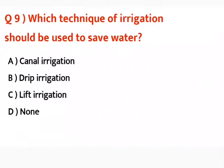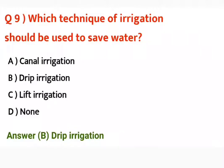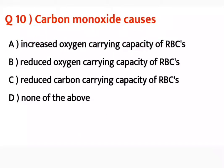Question number nine: Which technique of irrigation should be used to save water? Qunsi technique hai irrigation ki jis se hum pani ko bacha sakte hai? Correct answer is drip irrigation. Bilkul roots ke bilkul nazdik ek-ek-katra pani girta hai, us se hum drip system kehte hai.